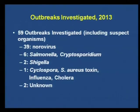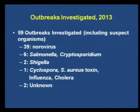We also had two Shigella outbreaks, one cyclospora, one staph aureus toxin outbreak, influenza, and a cholera case — which is theoretically marked as an outbreak because there shouldn't be cholera in Iowa. Two outbreaks remain unknown. That just happens sometimes — by the time we hear about it, the patients have recovered, stool testing finds nothing, we test food and find nothing. We can hypothesize based on symptoms, but sometimes we just never know.